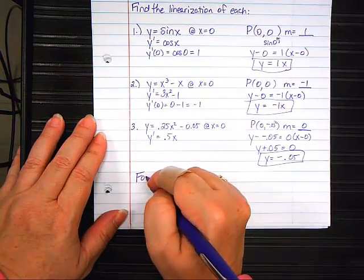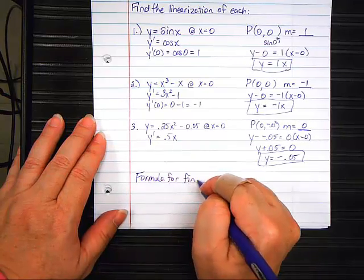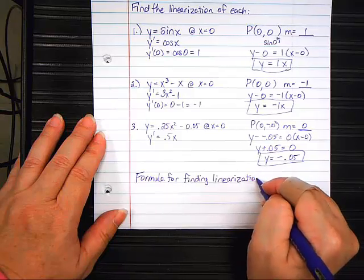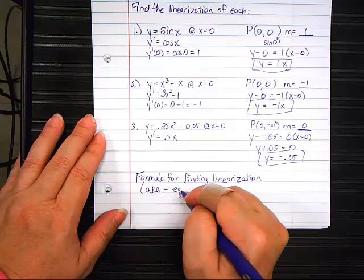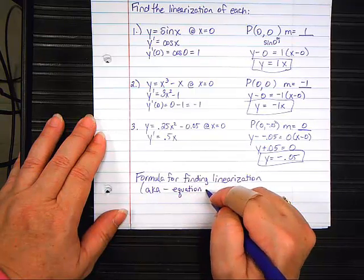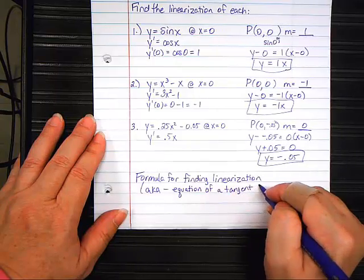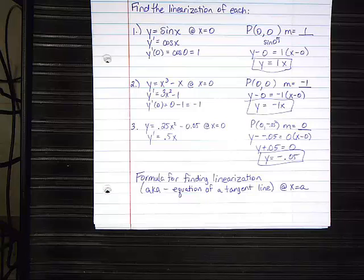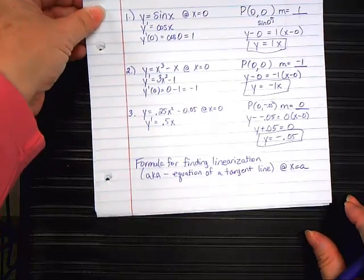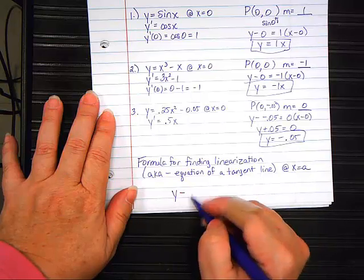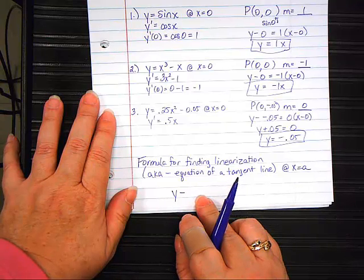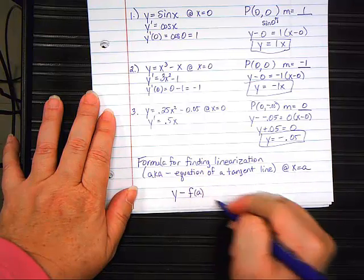So, now we're going to write an official formula for finding what is called a linearization. And what you need to remember, it's the same process as finding the equation of a tangent line. It's just got a new name. At X equals A. It will always give you a point to center the line on. We're going to kind of build this together.